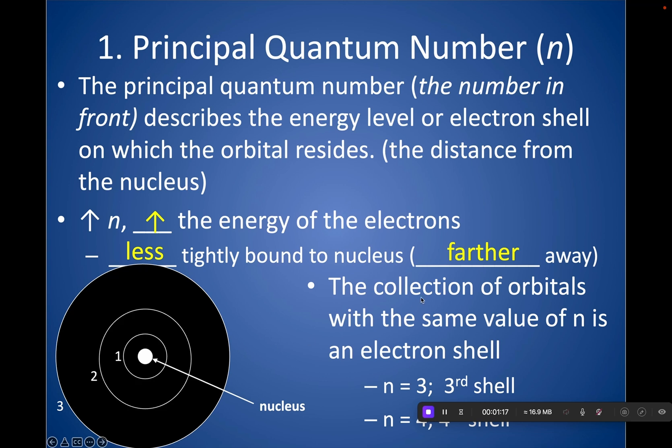And any collection of orbitals with the same value of n is called an electron shell. So anytime you see a 3 in front, that corresponds to the third shell. And it's 3, that's your principal quantum number.